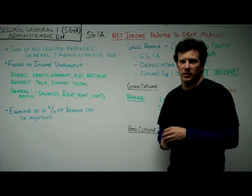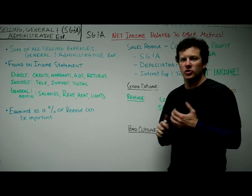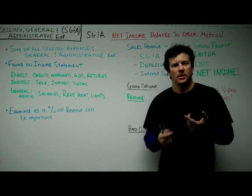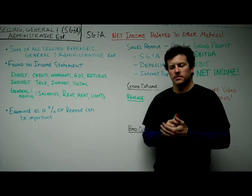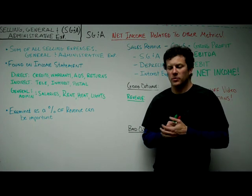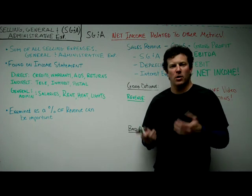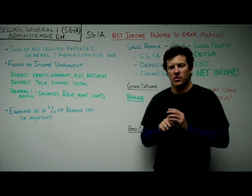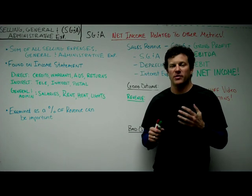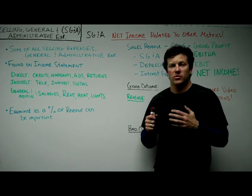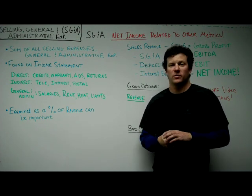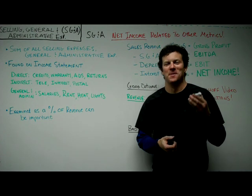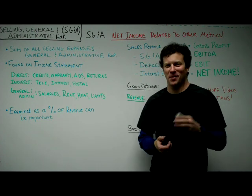Selling General and Administrative Expenses is a financial term that appears on the income statement. It's used in relation to things like net income and figuring different margins. Whenever you're looking at the profitability of a company, SG&A is part of that process.